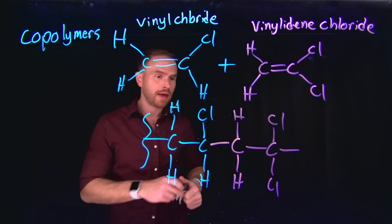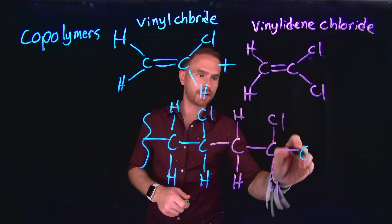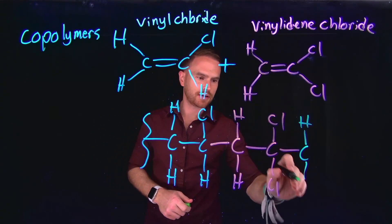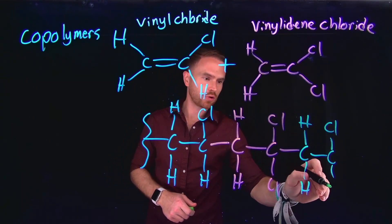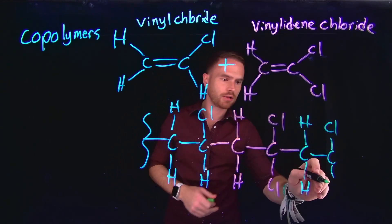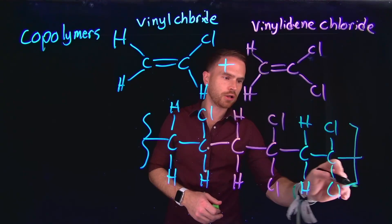So for this reason, we have a copolymer built up of vinyl chloride and vinylidene chloride, and they can alternate their structures or their existence in the polymer to create this brand new copolymer.